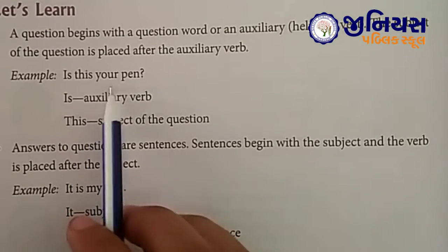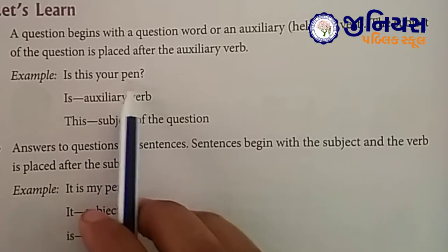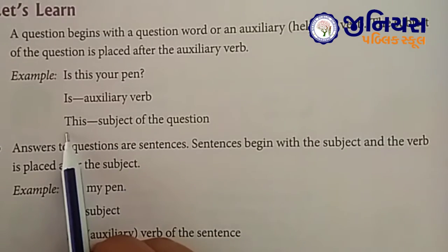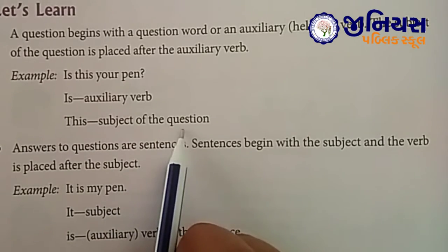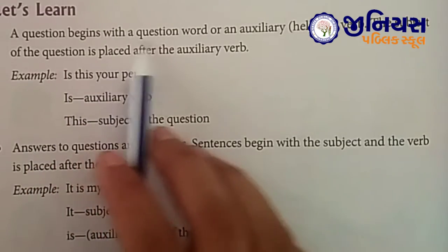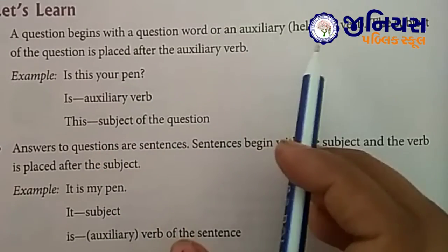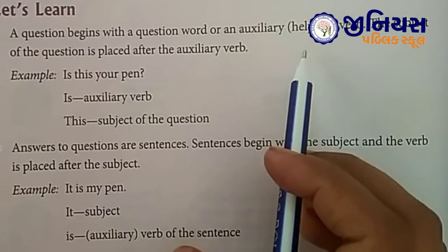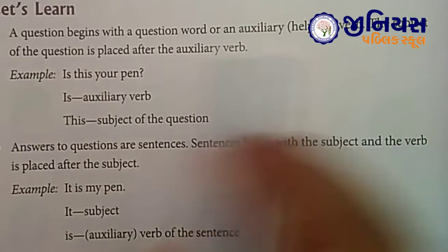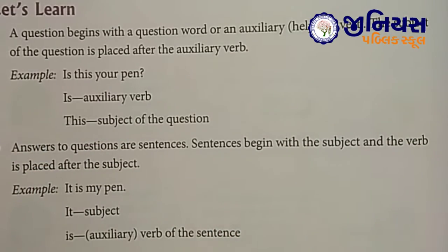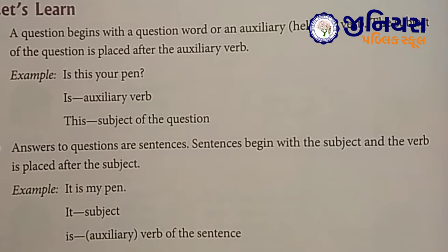Example: Is this your pen? Here 'is' is the auxiliary verb, and 'this' is the subject of the question. Question ya to question words se start hota hai — jaise what, when — ya phir auxiliary verb se, jaise may, is, am, are. Pehle hum question word use karte hain, phir subject use karte hain.